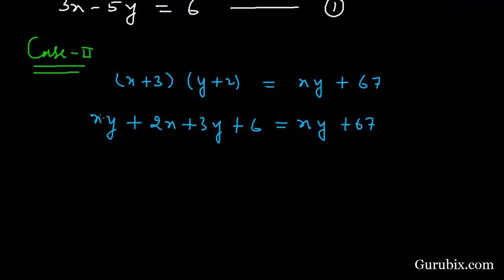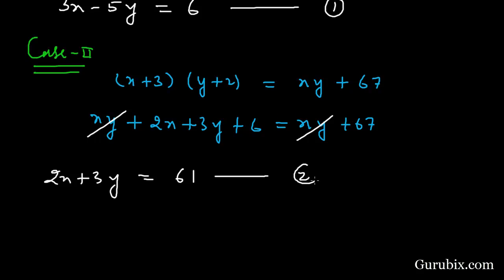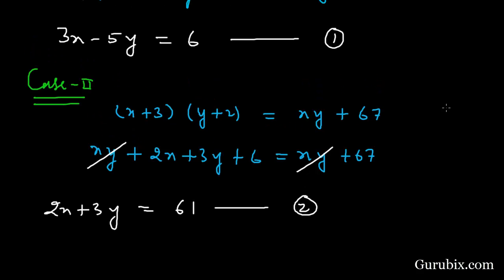Cancelling xy from both sides, we have 2x + 3y = 61. This is equation number 2. Now we shall apply the substitution method to solve this pair of linear equations.